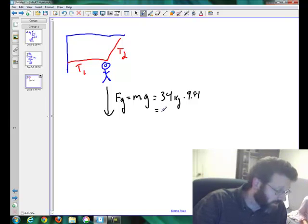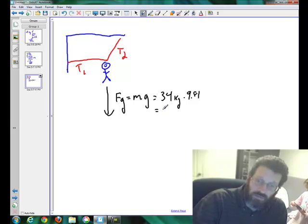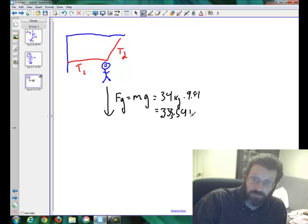So the force on that downwards will be 333.54 newtons. That's 333.54 newtons, and that's the force going downward. So what we've calculated here is the force of gravity acting down on the monkey.